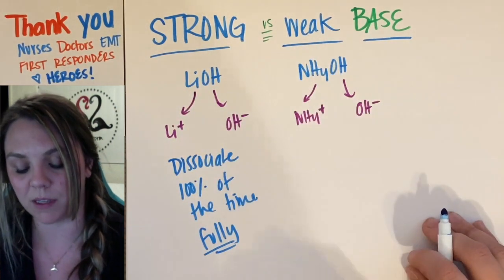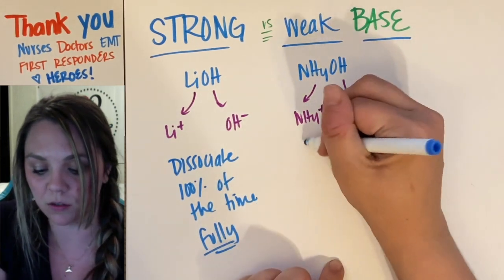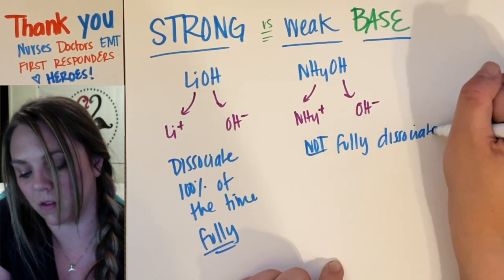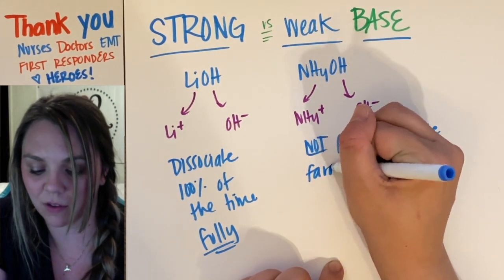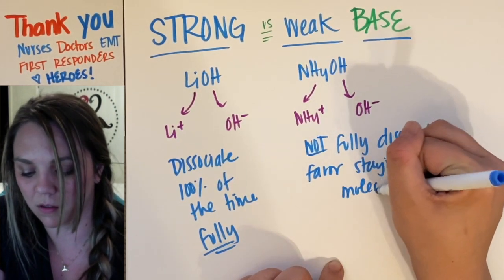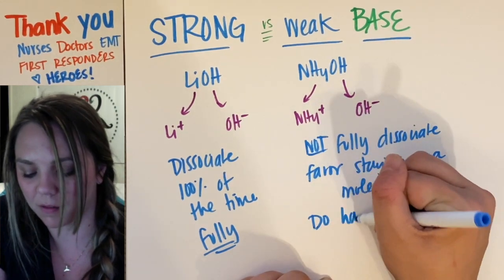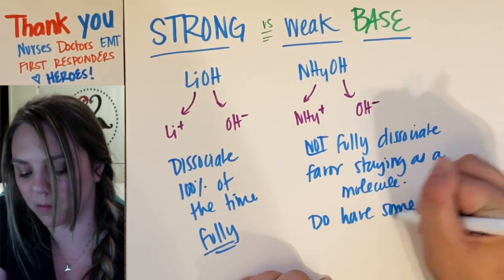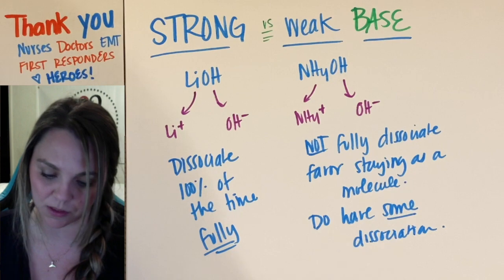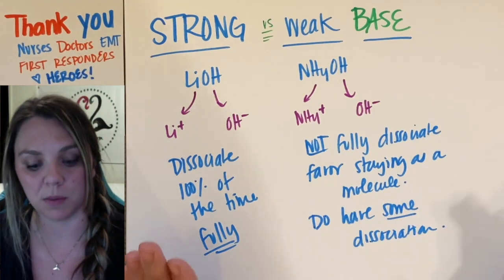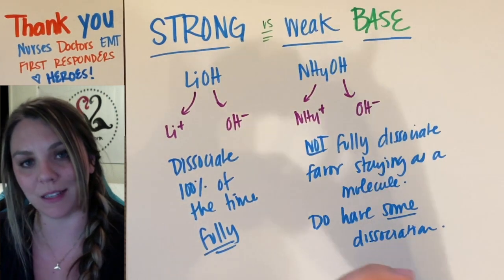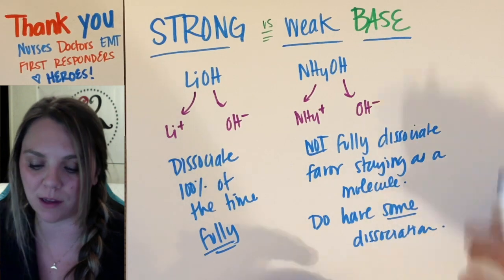Versus your weak bases, like ammonium hydroxide, which are not going to fully dissociate. They actually favor staying as a molecule, but you do have some dissociation. So the big picture: your strong base breaks up 100% of the time, while a weak base stays together as a molecule most of the time and only sometimes breaks up.